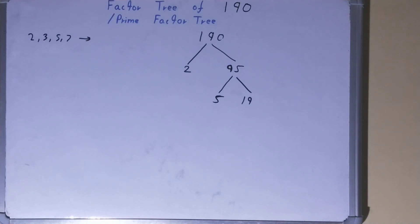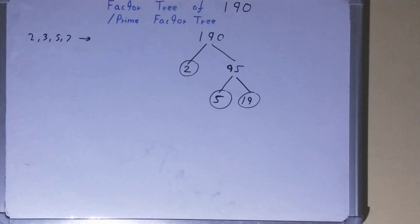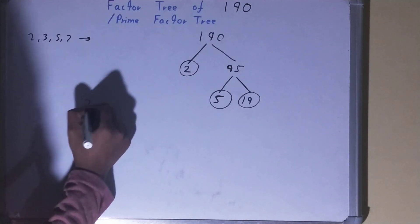Now do we need to factorize this 19 further on? No, because the number 19 is a prime number and not a composite number. So your work is done over here. The only thing you need to do is circle the ending nodes or the terminating nodes like this, and that will be your required factor tree. Now if you want, you can write it separately in the form of prime factors like this.